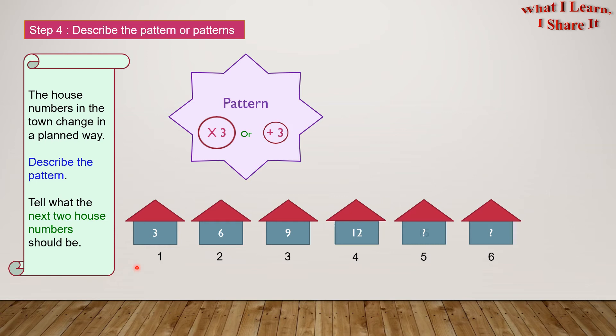So 3 times 1 is 3. 3 times 2 is 6. 3 times 3 is 9. 3 times 4 is 12. 3 times 5 is 15.